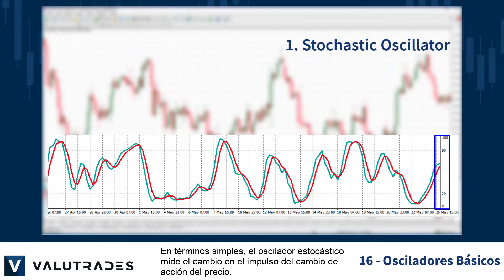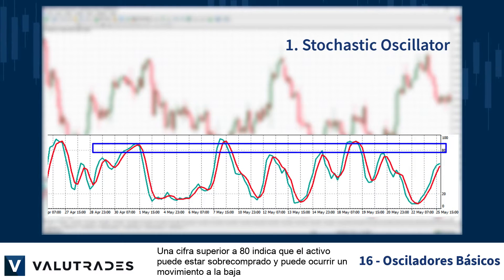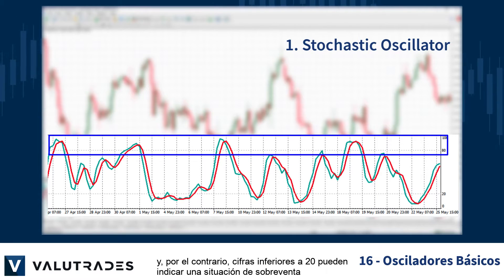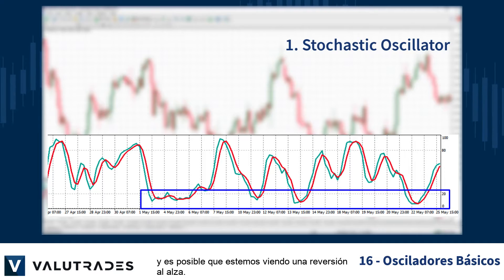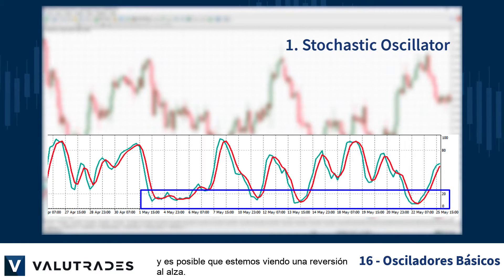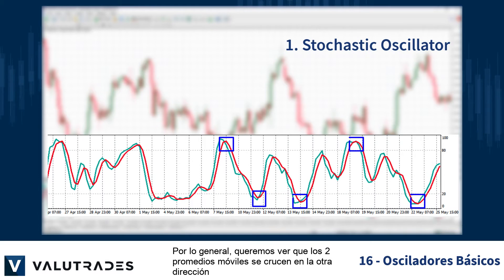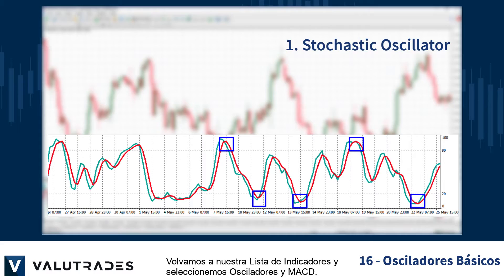In simplistic terms, the stochastic oscillator measures the change in momentum of price action change. A figure over 80 indicates that the asset may be overbought and a move to the downside may occur, and conversely, figures below 20 may indicate an oversold situation and we may be looking at a reversal to the upside. Typically, we want to see the two moving averages cross to the other direction before we consider opening a position.